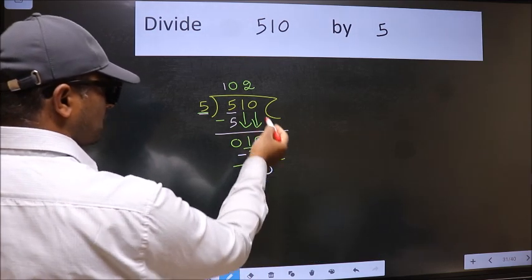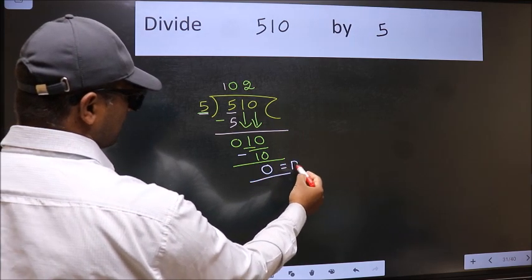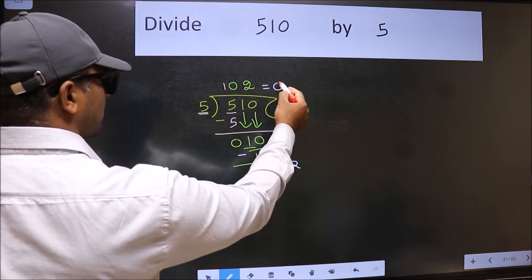No more numbers to bring it down. So we stop here. This is our remainder and this is our quotient.